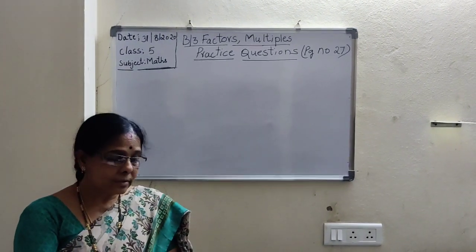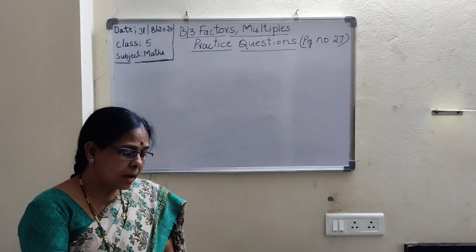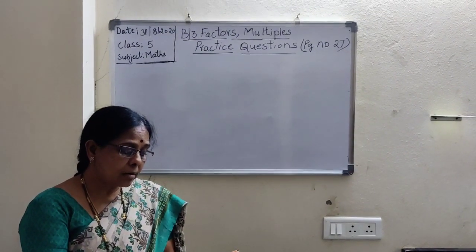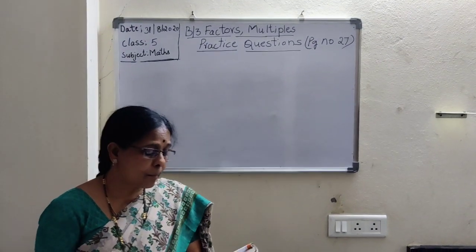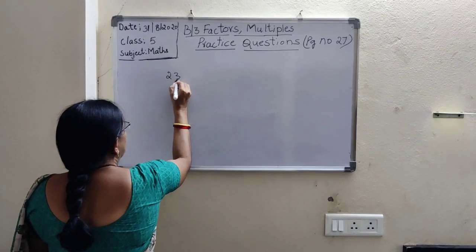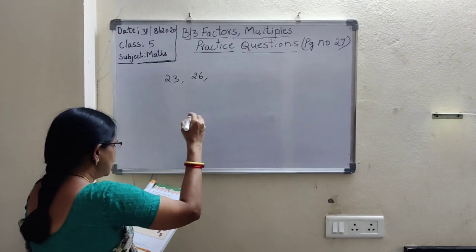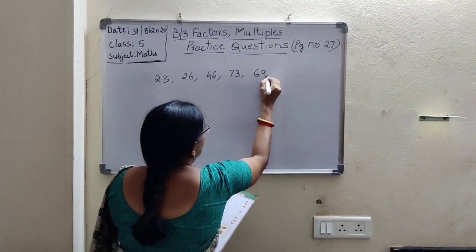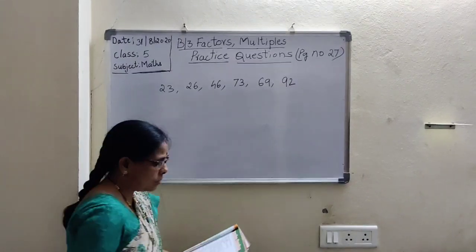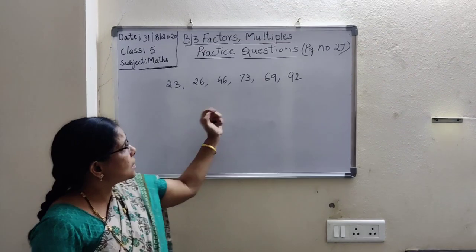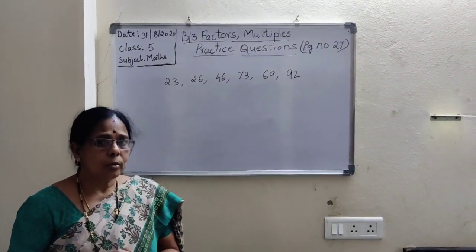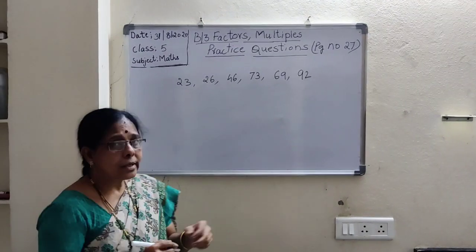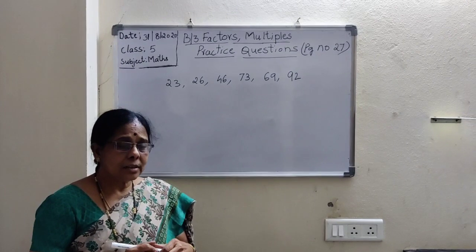In this first question: which of the following numbers are divisible by 2? What is the question children? Which of the following numbers are divisible by 2? First I write the numbers here: 23, 26, 46, 73, 69, 92. Now which of these numbers are divisible by 2? See the divisibility rule of 2. A number is divisible by 2 if it ends with an even number.